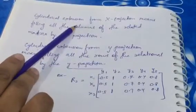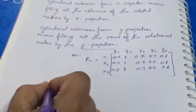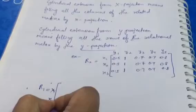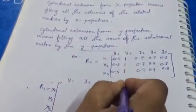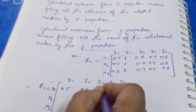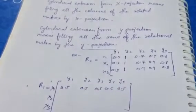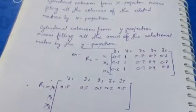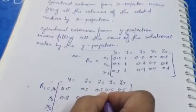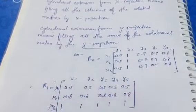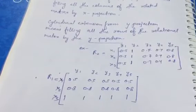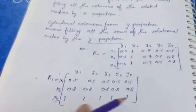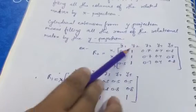For the cylindrical extension from X projection, denoted R1, we set up the matrix with rows x1, x2, x3 and columns y1, y2, y3, y4, y5. For x1, all columns get 0.5; for x2, all columns get 0.8; and for x3, all columns get 1. That is how we find the cylindrical extension from X projection.